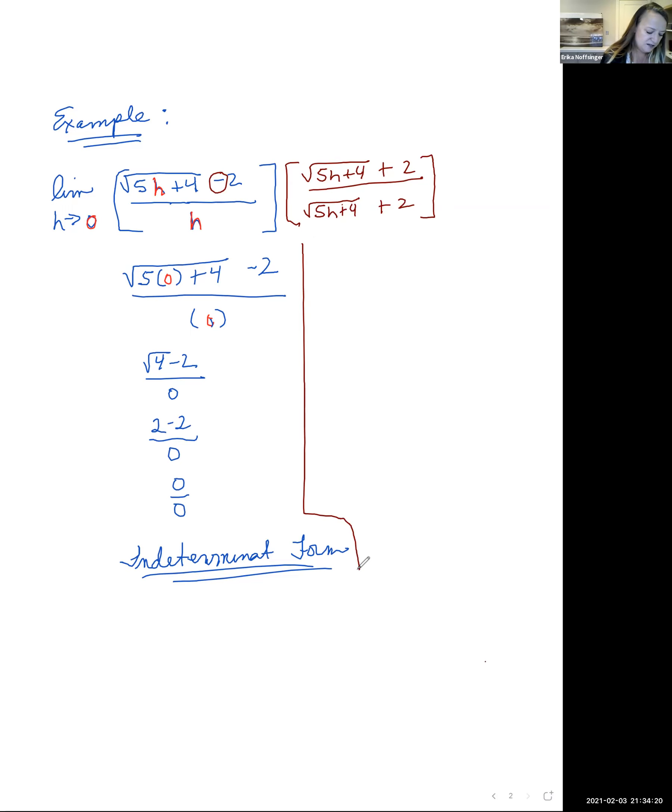So let me just bring down the limit while we distribute. So this is the limit as h is going to 0. Again, we talked about this last example, we have difference of squares here, so I could distribute this out, or think of this as the same thing as a squared minus b squared. So our first grouping, which is the square root of 5h plus 4, that quantity squared minus 2 quantity squared, all over.